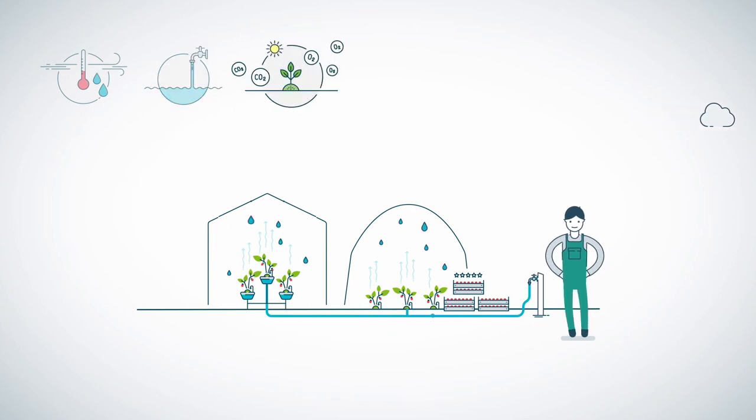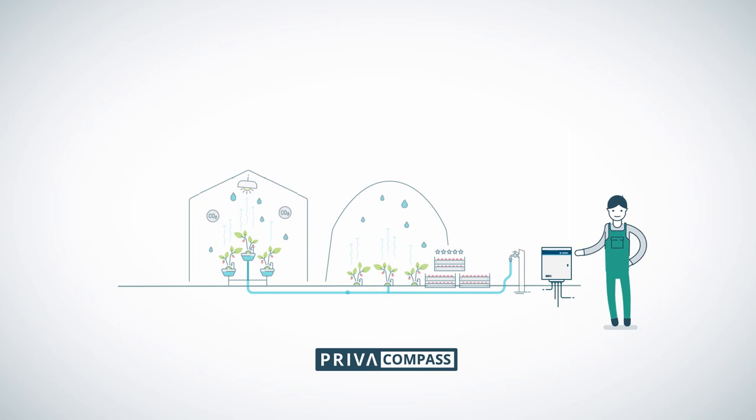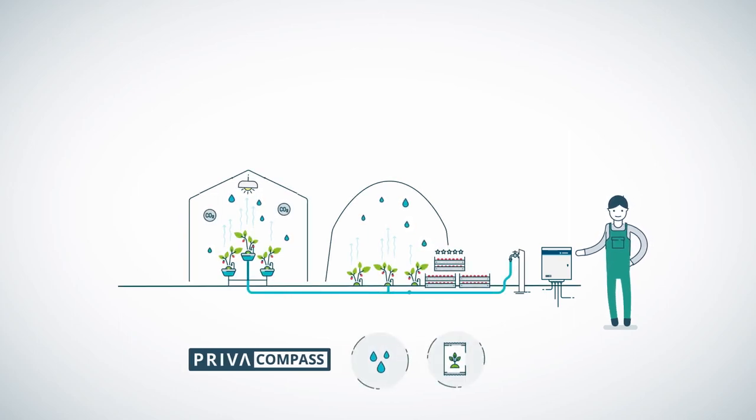You can control and optimize light and CO2 to have the right balance to your photosynthesis process. Priva Compass allows you to do this as efficiently as possible with minimal use of water, fertilizers, and energy.